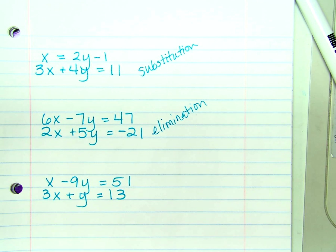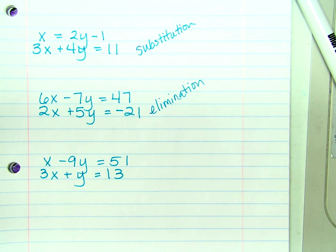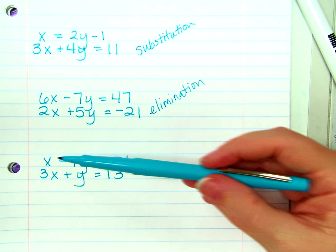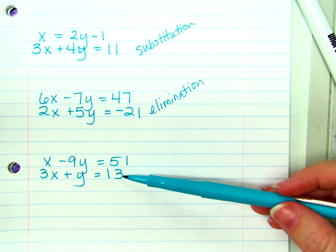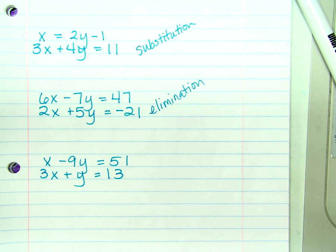Last one. While I have a y by itself here, I could solve this one relatively easy for y to make it easy for graphing. I wouldn't be able to do that with the top equation because I'd be dividing everything by negative 9.